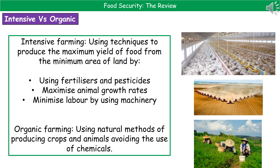The other big aspect of producing enough food is the type of farming we use. We have a choice between intensive farming and organic farming. Intensive farming uses techniques to produce the maximum yield from the minimum area of land, involving fertilizers, pesticides, maximizing animal growth rates by keeping animals inside in restricted conditions, and using lots of machinery rather than human labor. You can see pictures of intensive farming scenarios on the right.